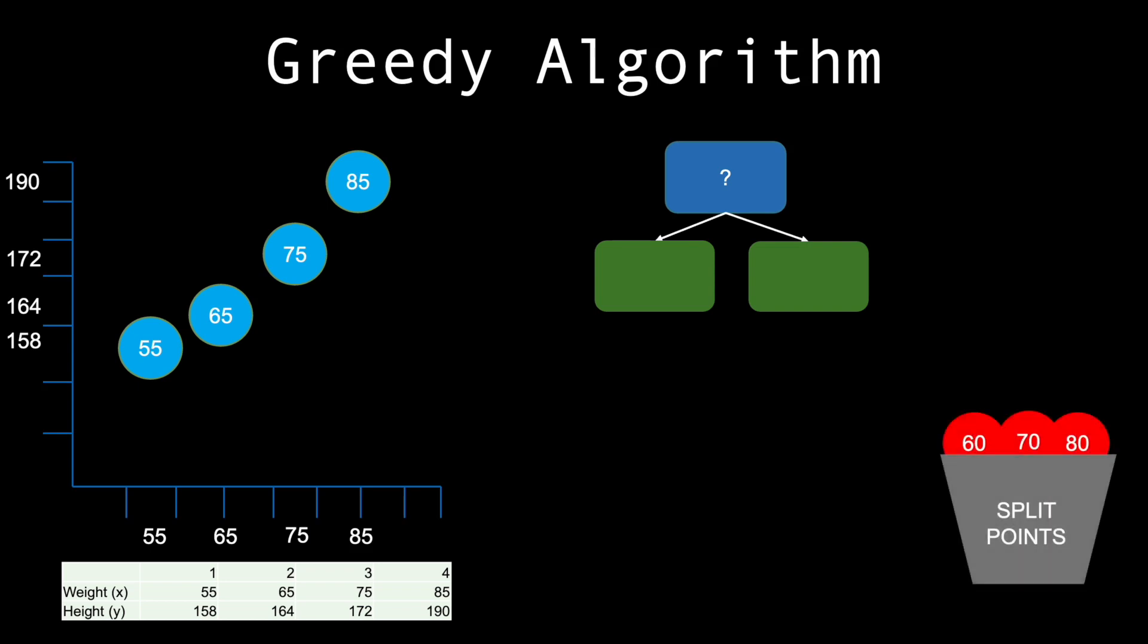The best optimization we can do for discrete variables is to use a greedy algorithm for decision trees, meaning we make the optimal decision at each split point without thinking about future split points.